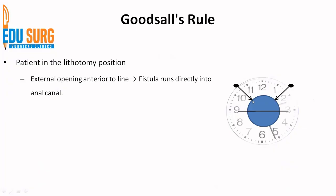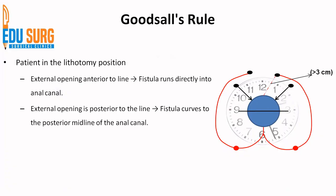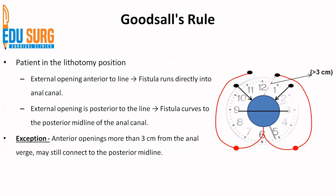So this is Goodsall's rule for anteriorly located fistulas with less than 3 centimeter distance. All other fistulas — those with posterior external openings — usually open in the midline posteriorly. So for a fistula located at 4, 7, or 8 o'clock, the internal opening is going to be midline in the posterior part. There is an exception: if there is an anterior opening more than 3 centimeters from the anal walls, then even this fistula will follow the posterior rule and open in the midline posteriorly.